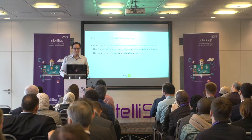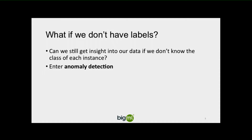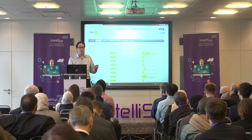That was kind of easy, right? When you have a labeled dataset and the right tools, you can just press a button and get a predictive model that gives you insight into your data. So what if we don't have the labels? Can we still get insight if we don't know the class of each instance? I'm going to demonstrate BigML's anomaly detection feature. I'm going to go back to my dataset and get rid of the labels of benign or malignant, leaving only the nine measurements for each biopsy.